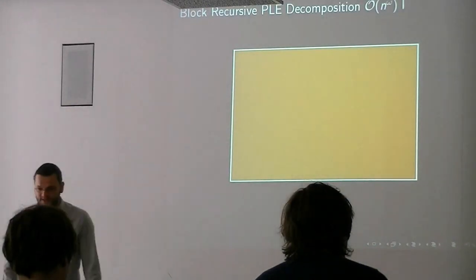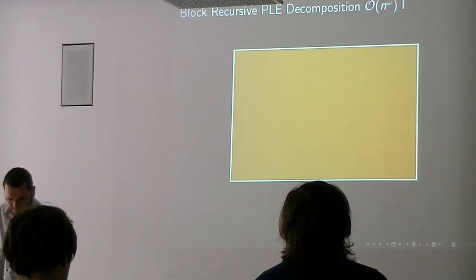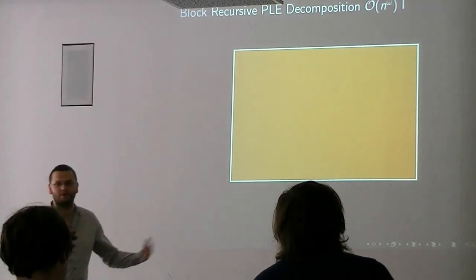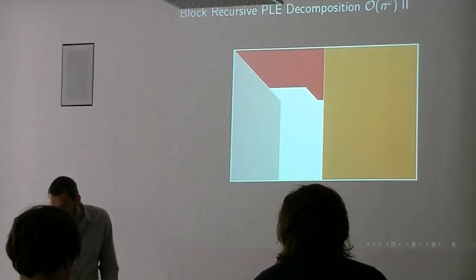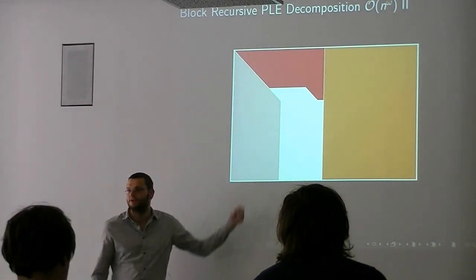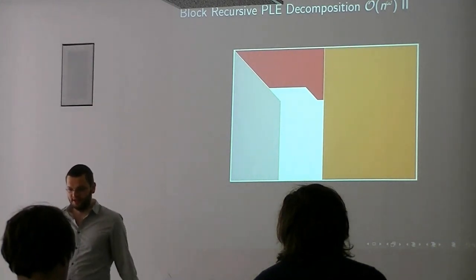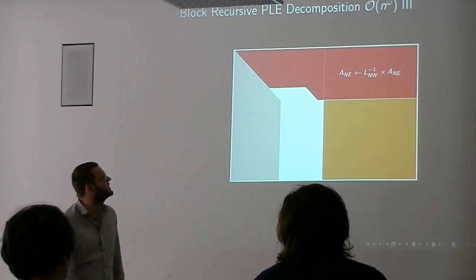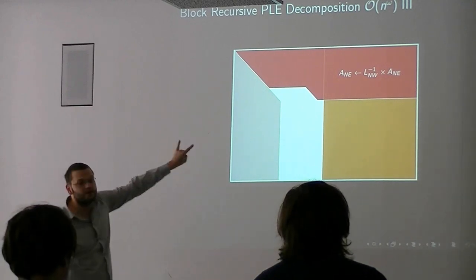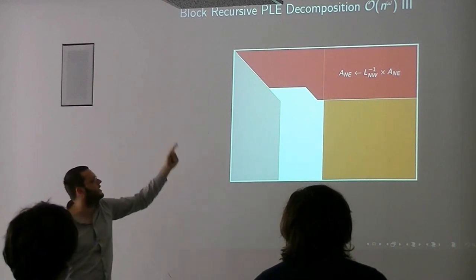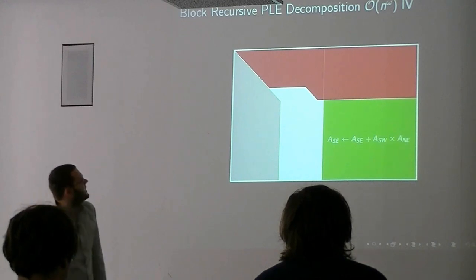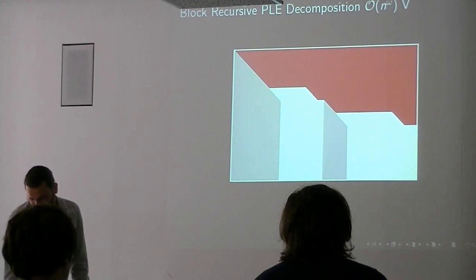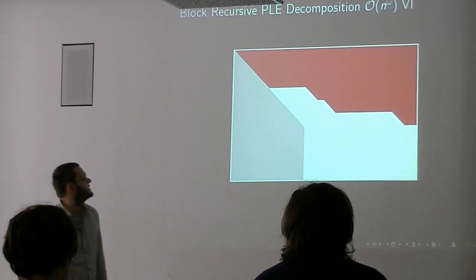There's one computation where you get a slight worse complexity if you do that instead of another algorithm, but for almost all things you want to compute, computing the PLE first is the way to do it. It's a very nice paper, so efficient dense linear algebra was a bit of a black art - there was this paper there, there was this paper there, you had to talk to the right people. And this is a nice way - this is how all these different decompositions are related, this is the leading constants. It's very nice. So if you work on efficient dense linear algebra, then you should definitely read this paper.